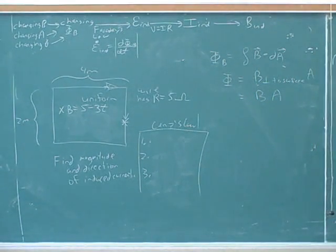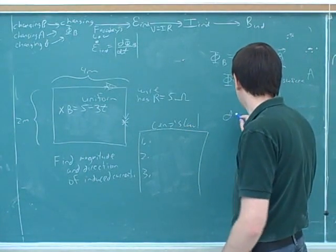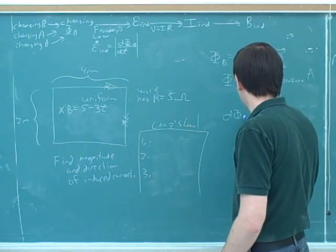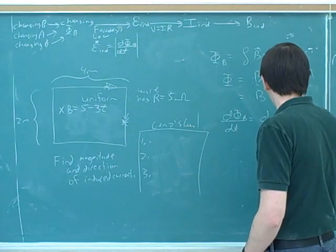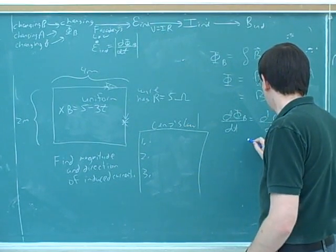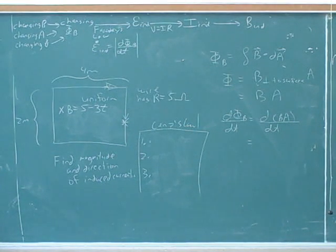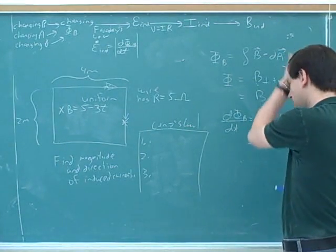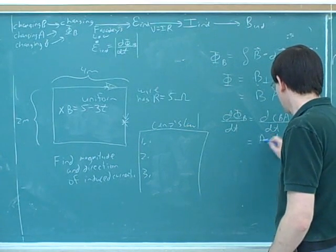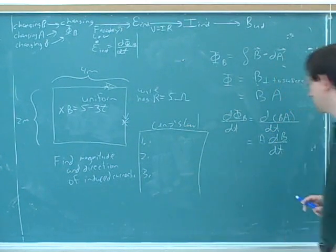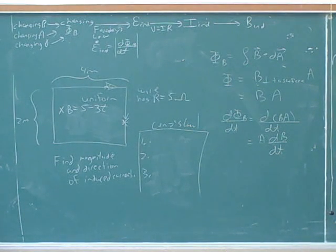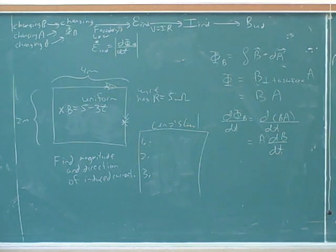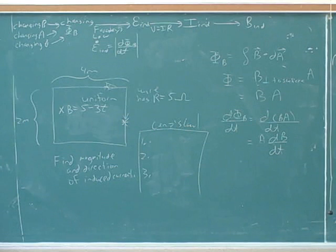So what do we do next? After we've gotten an expression for the magnetic flux, then we take the derivative. All right, well, what's the first thing we can do to simplify this expression? We can pull A out because the A here is a constant. And then we have an expression for D, D, D, T, so we can plug that in. Okay, so let's write down what we get at that point.